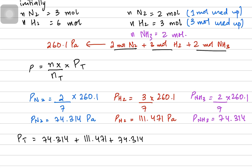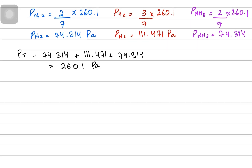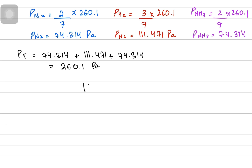Based on these calculations: N₂ has 74.314 Pa, H₂ has 111.471 Pa, and NH₃ has 74.314 Pa. Adding these partial pressures gives 260.1 Pa total, which confirms our answer. Kp is found by placing the partial pressure of products in the numerator and partial pressures of reactants in the denominator, each raised to the power of their mole ratios, just like Kc.